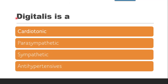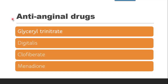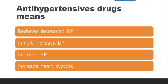The next question is: digitalis is classified as what — cardiotonic, parasympathetic, sympathetic, or antihypertensive? Since digitalis works on the heart, it is cardiotonic. Then: which of the given is an antianginal drug — glyceryl trinitrate, digitalis, clofibrate, or menadione? The correct answer is glyceryl trinitrate, classified as an antianginal drug. A detailed classification trick is in the linked video.